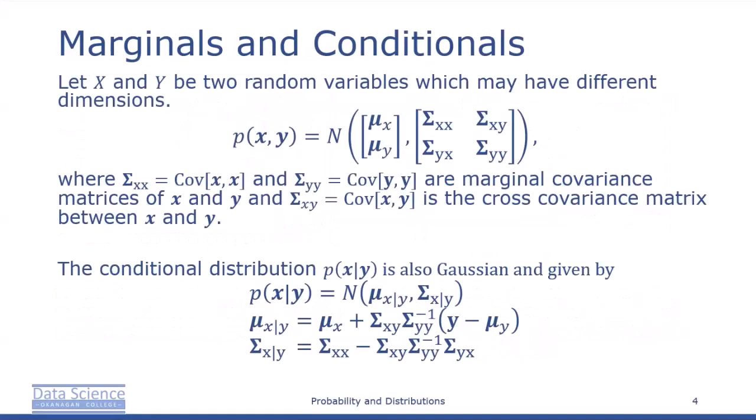We want to discuss marginalization and conditioning in the general case of multivariate random variables. If you find this confusing, try to consider two univariate random variables instead. Now let x and y be two random variables which may have different dimensions. Then the probability of x and y is normally distributed with mean vector mu x, mu y, and covariance matrix sigma xx, sigma xy, sigma yx, sigma yy — where sigma xx and sigma yy are marginal covariance matrices, and sigma xy is the cross covariance matrix between x and y.